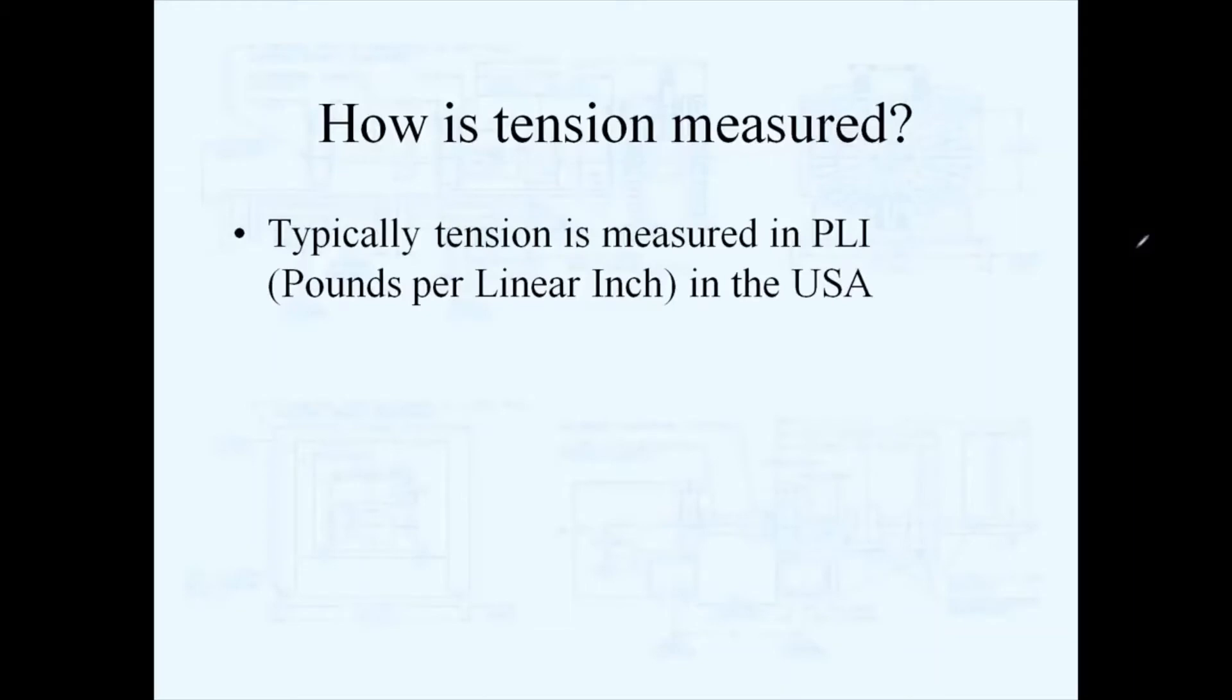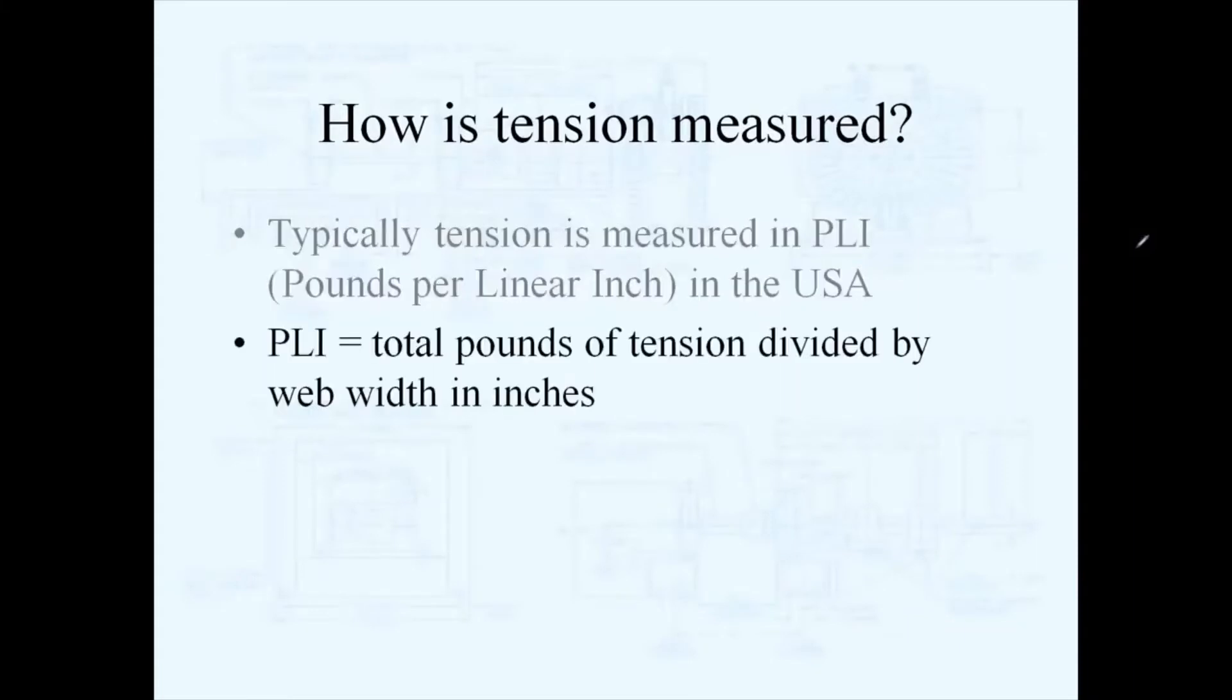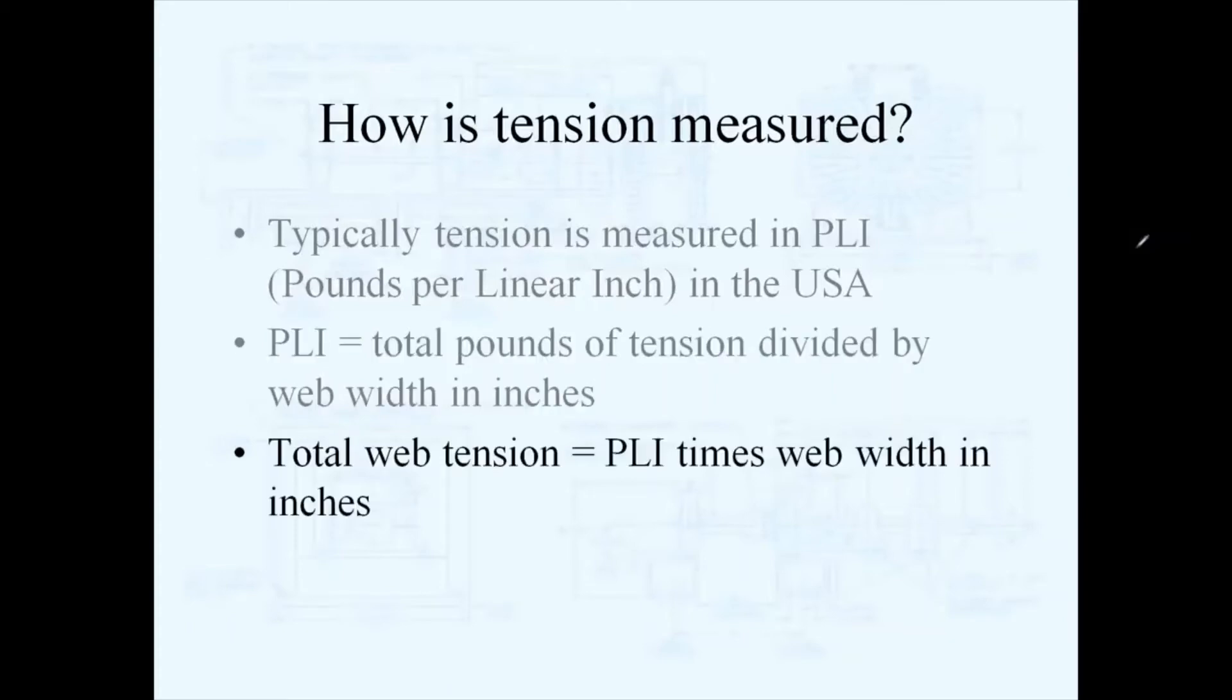Tension is measured typically in the United States as pounds per linear inch, or PLI. Basically, pounds per linear inch equals the total pounds of tension across your web divided by the web width in inches.